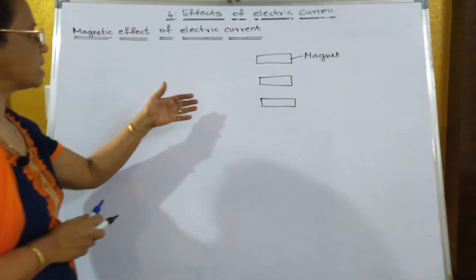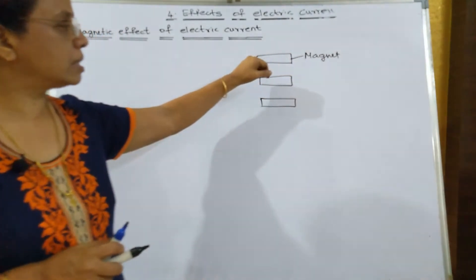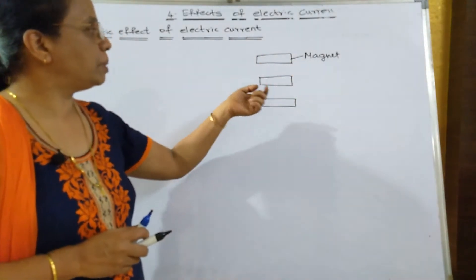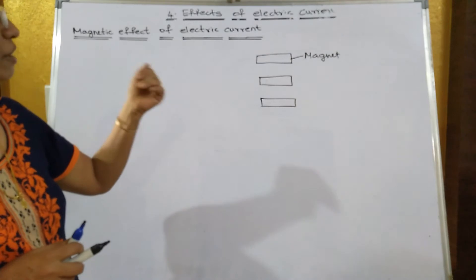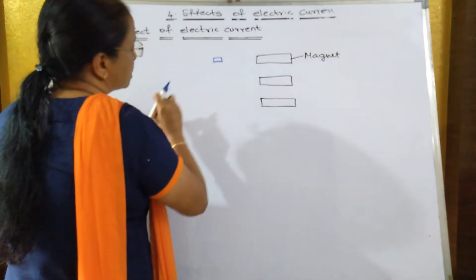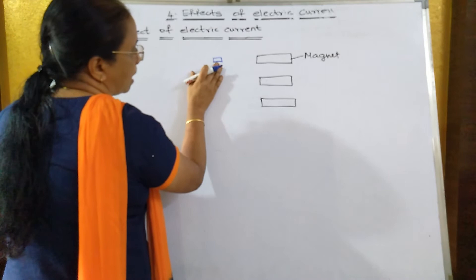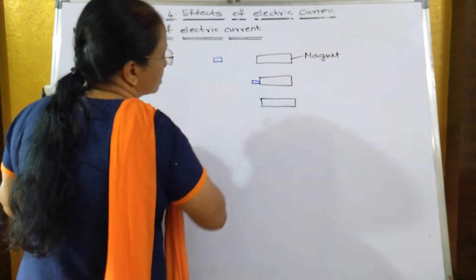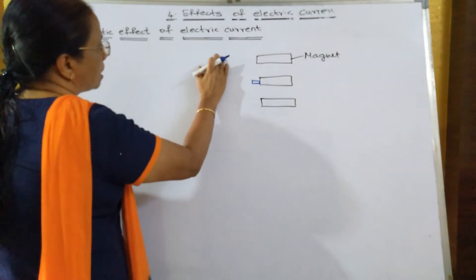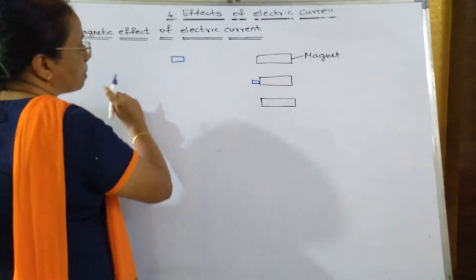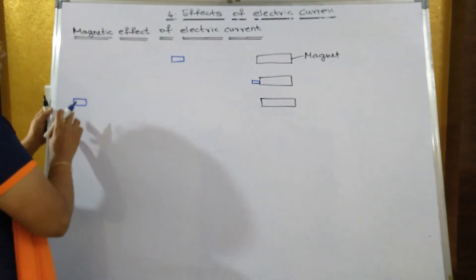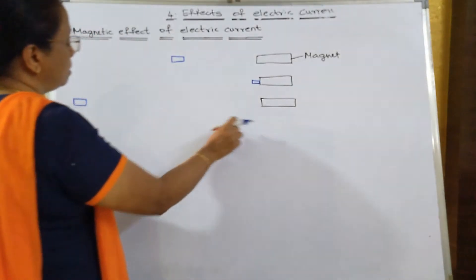Now what is a magnetic field? If I take an iron object and put it in front of the magnet, the magnet will attract the iron object. If I place this iron object a little bit far away from the magnet, it will still attract the iron object. But if I keep it very far away from the magnet, then it will not be able to attract the iron object.